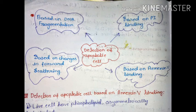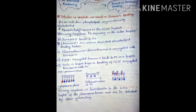Here we elaborate on two processes: detection based on PI binding and detection based on annexin-5 binding, using a technique called flow cytometry. So, detection of apoptotic cells based on annexin-5 binding — what is annexin-5?